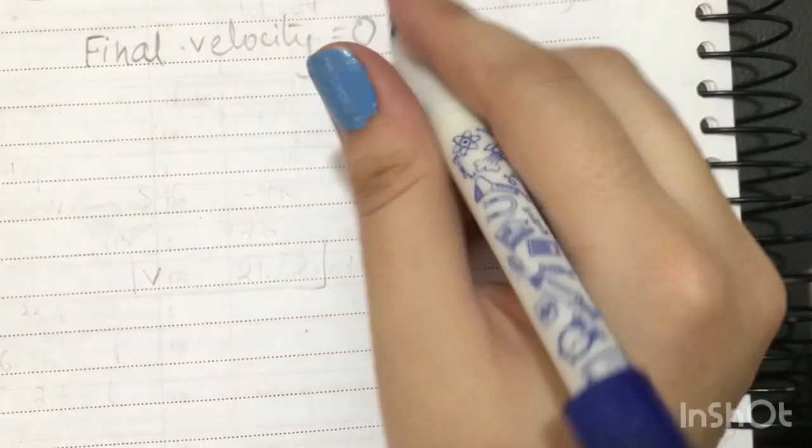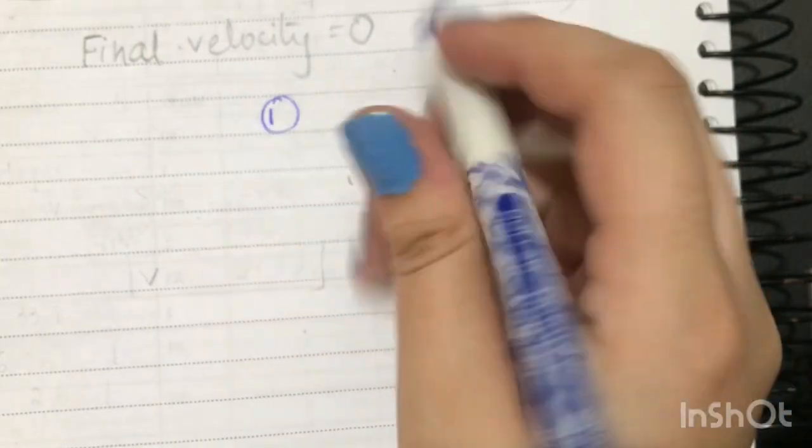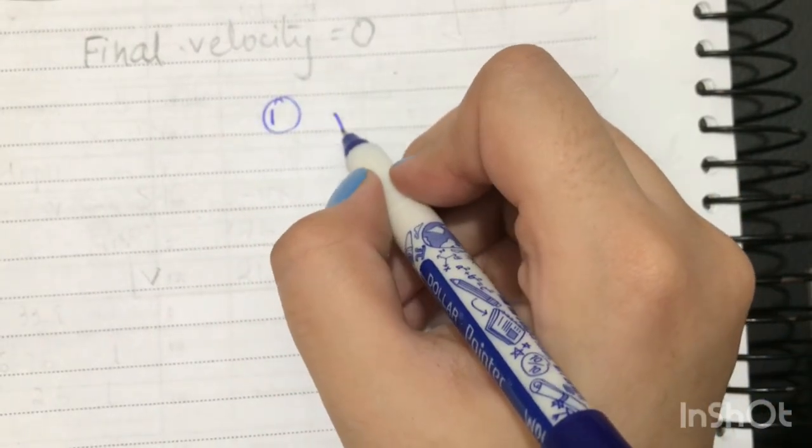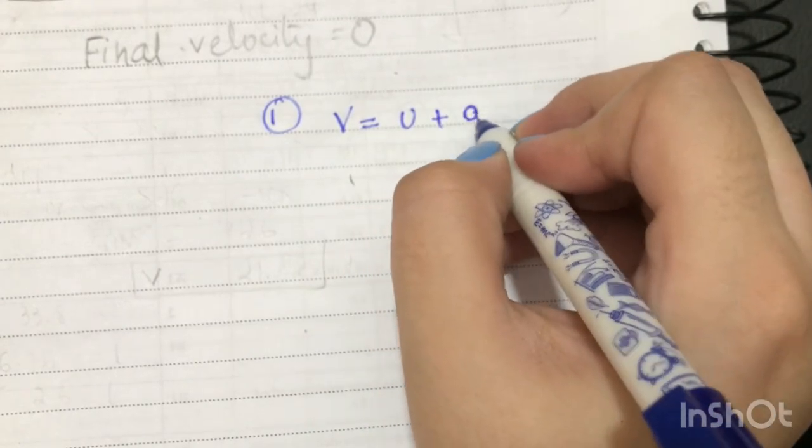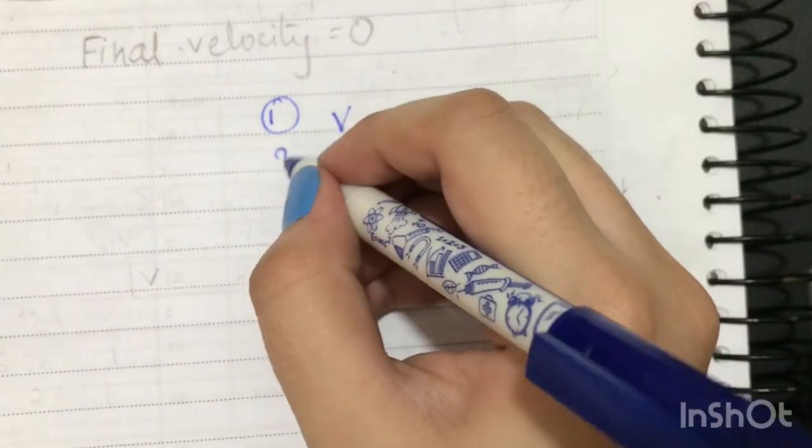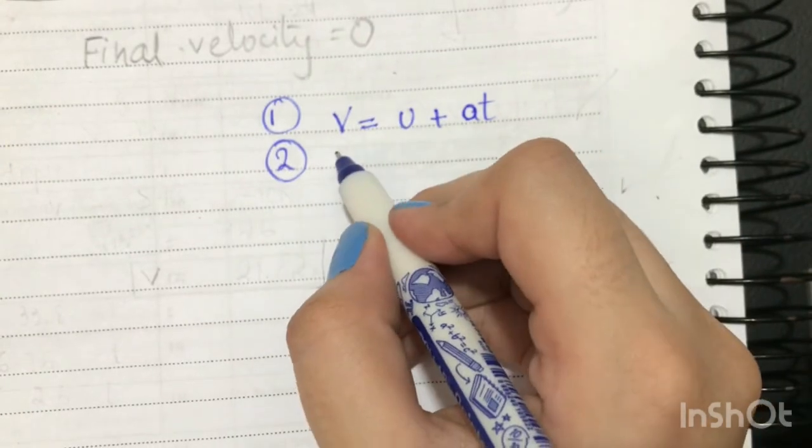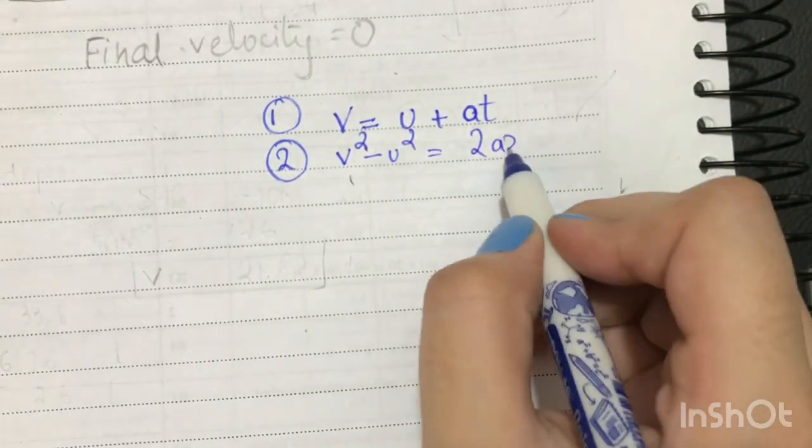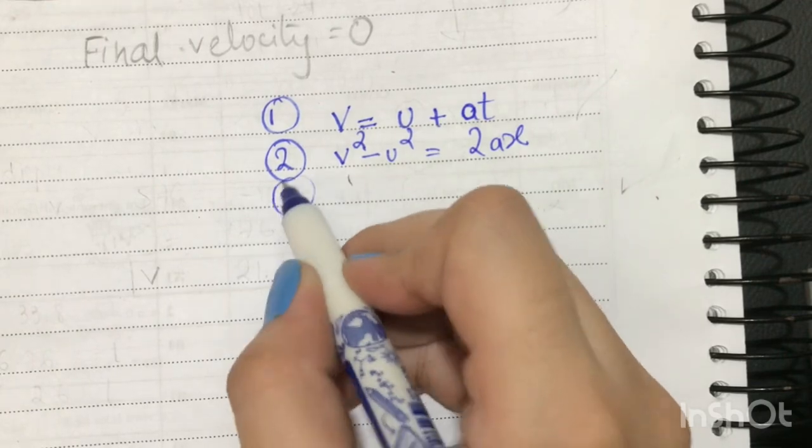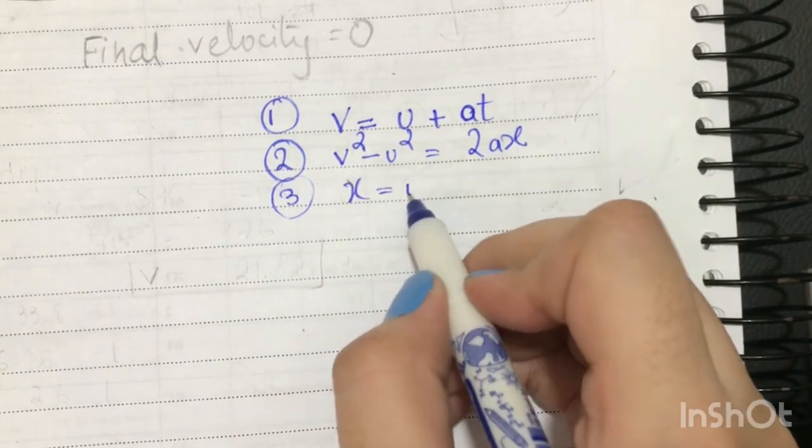When doing questions of kinematics, you have three equations or formulas which you can use. The first is that final velocity v equals initial velocity u plus the acceleration a multiplied by the time t. The second is that v squared minus u squared equals 2ax. And the last one is x equals ut plus half at squared.